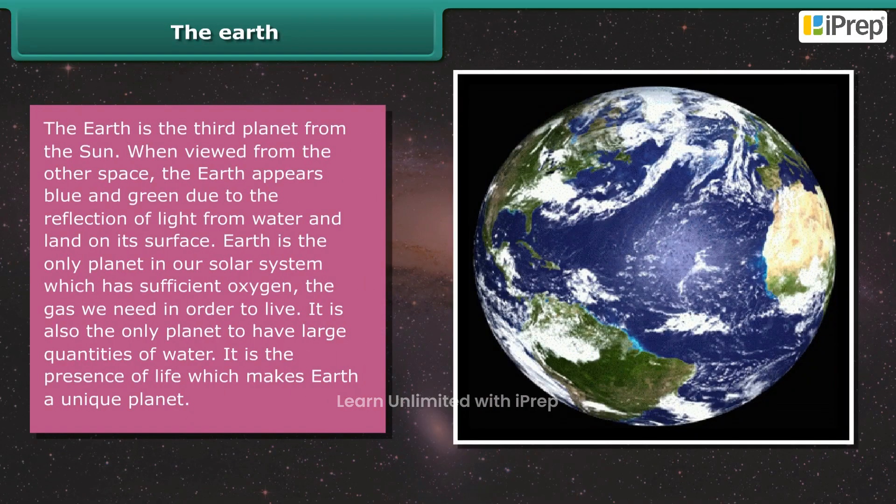The Earth is the third planet from the Sun. When viewed from outer space, the Earth appears blue and green due to the reflection of light from water and land on its surface.